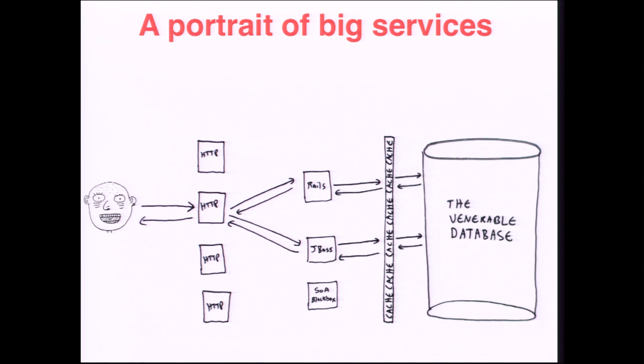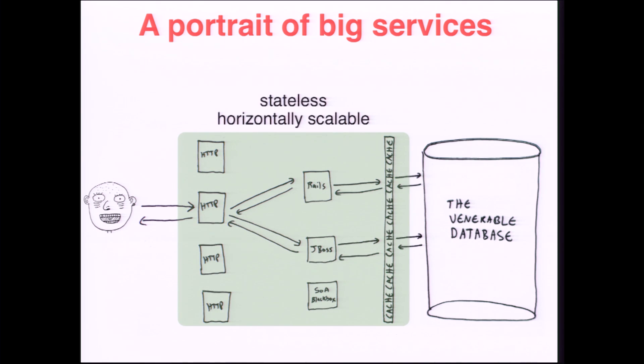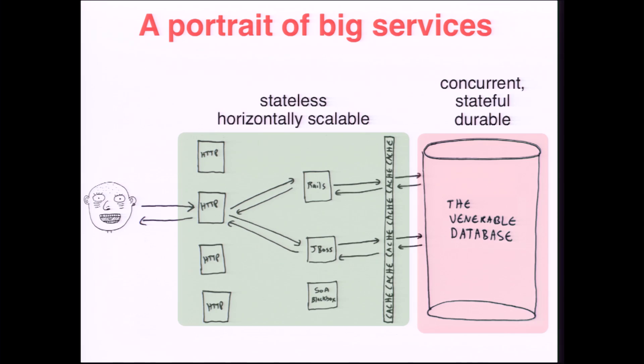Industry best practices tell us that these front-end services should all be stateless and horizontally scalable. They're pretty easy to actually run and reason about, whereas many of the difficult problems of distributed systems are pushed to this back-end database layer. We have to handle concurrent access to data, make sure it stays present despite failures, and make sure that we deliver correct query results. So when we have tons of user queries, how do we actually make sure the database stays in a good state?